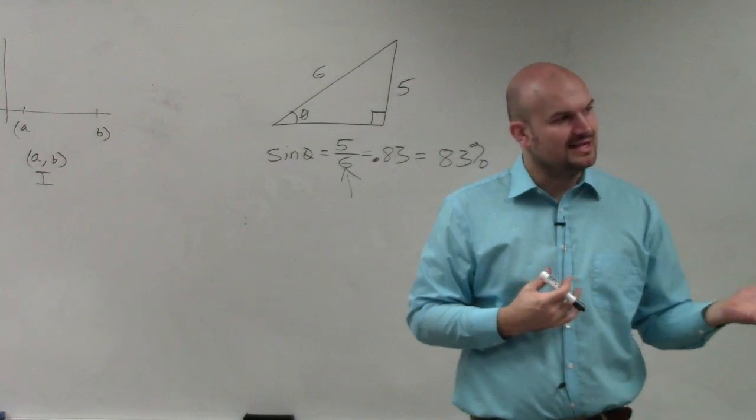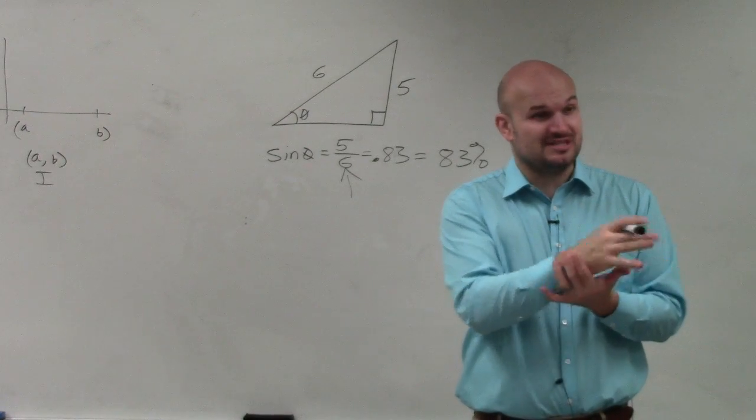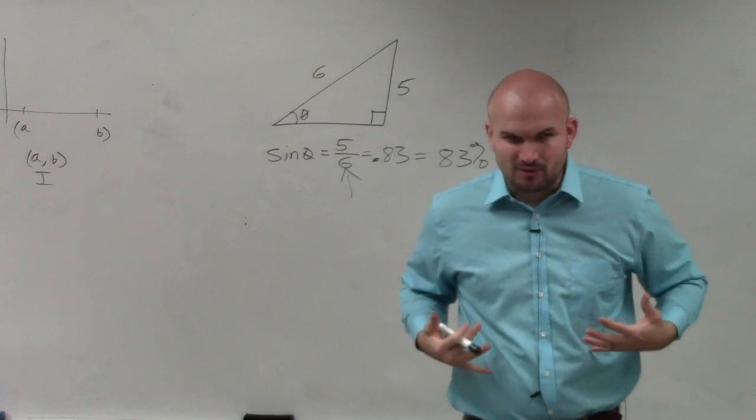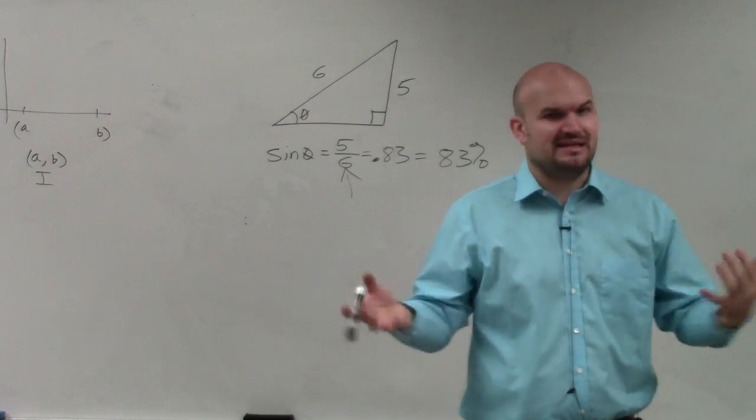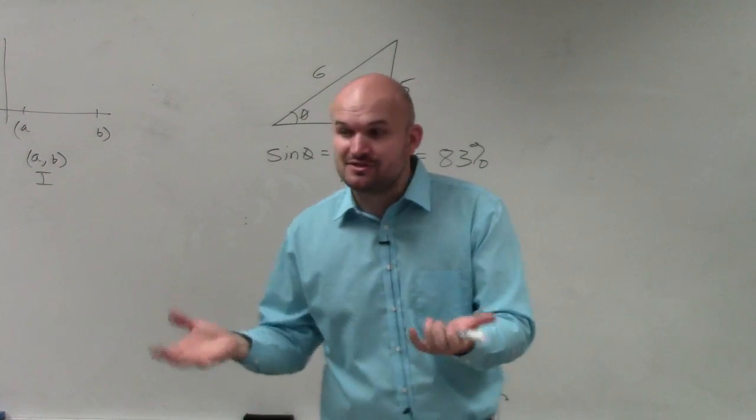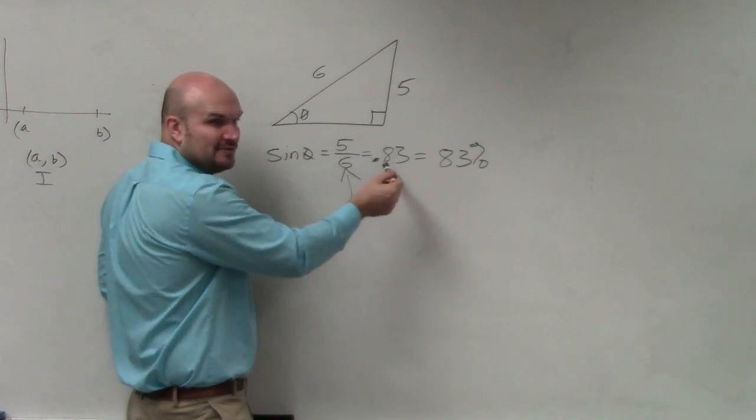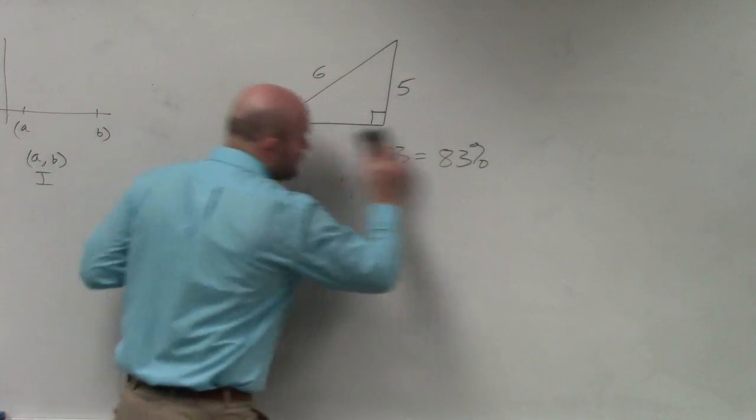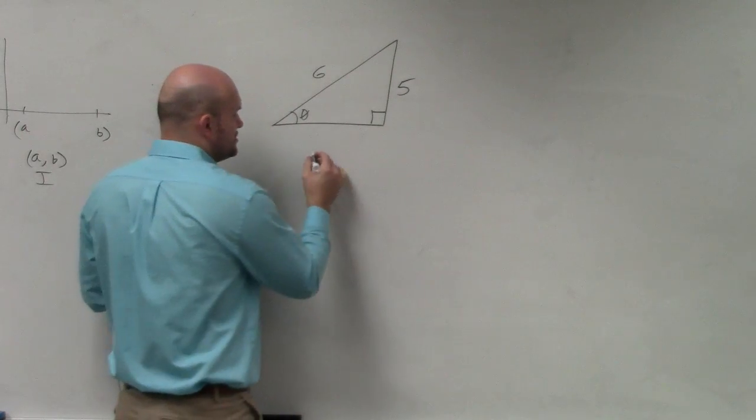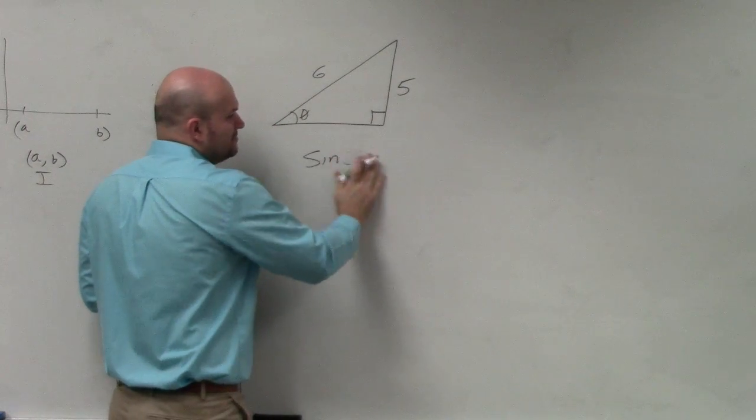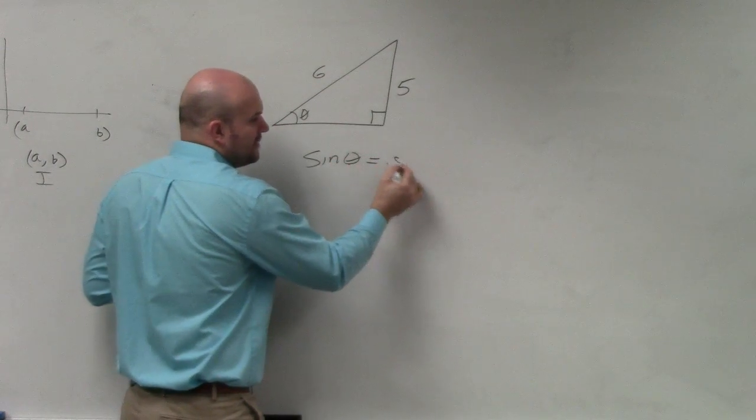But again, a lot of times when we get, we're going to start getting answers as decimals, and I want everybody to kind of understand, like, what exactly do these decimals mean? Rather than just, hey, here's my answer as a decimal. Well, if you get a decimal, and you get sine of some angle is 0.83, right? Let's just forget about all of this. Let's just pretend my answer is, you know, I do sine of some angle, whatever that angle is, and I get 0.83.